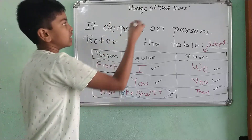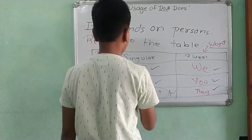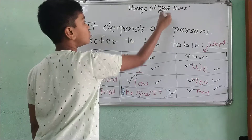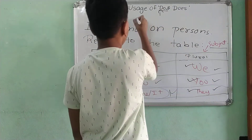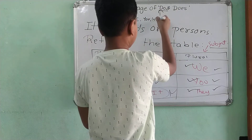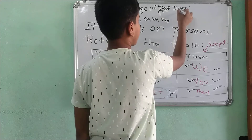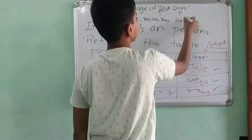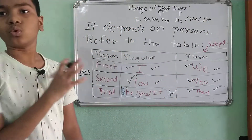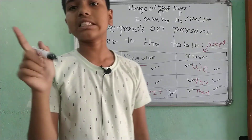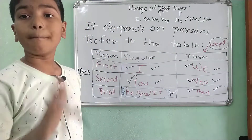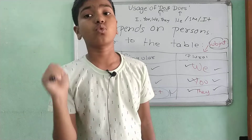Everywhere else, we don't use 'does.' So only 'do' is used with I, you, we, and they. With 'does,' only he, she, or it — only this much. This is the basic usage, and it's only used in the subject place, not in the object place. Wherever we see I, we, you, or they, we will use 'do.' And if you see he, she, or it, we use 'does.'